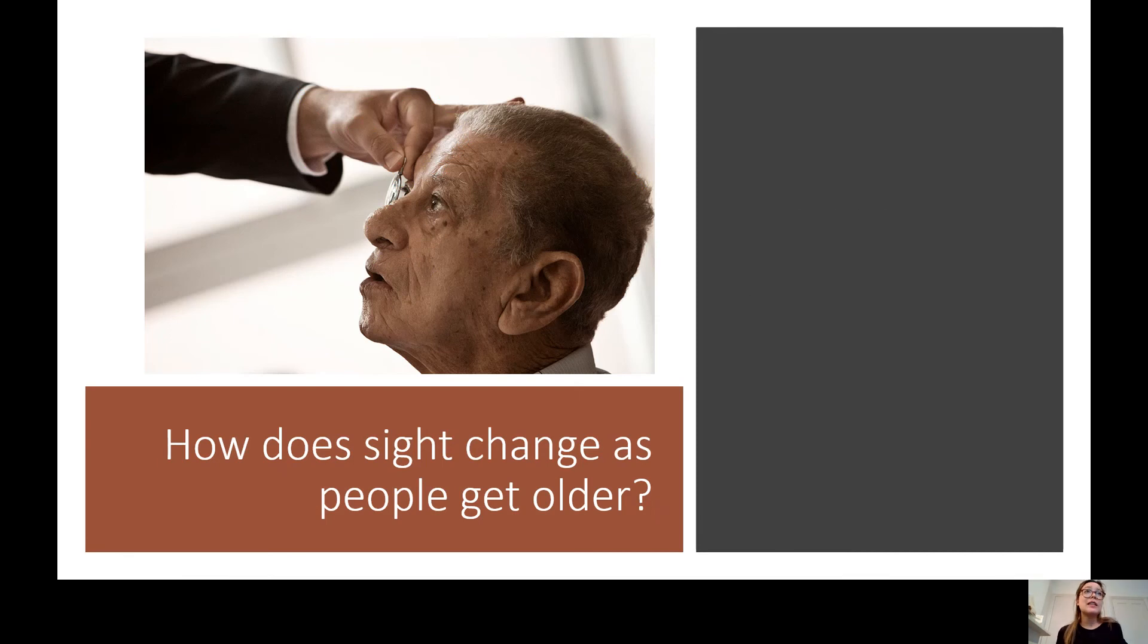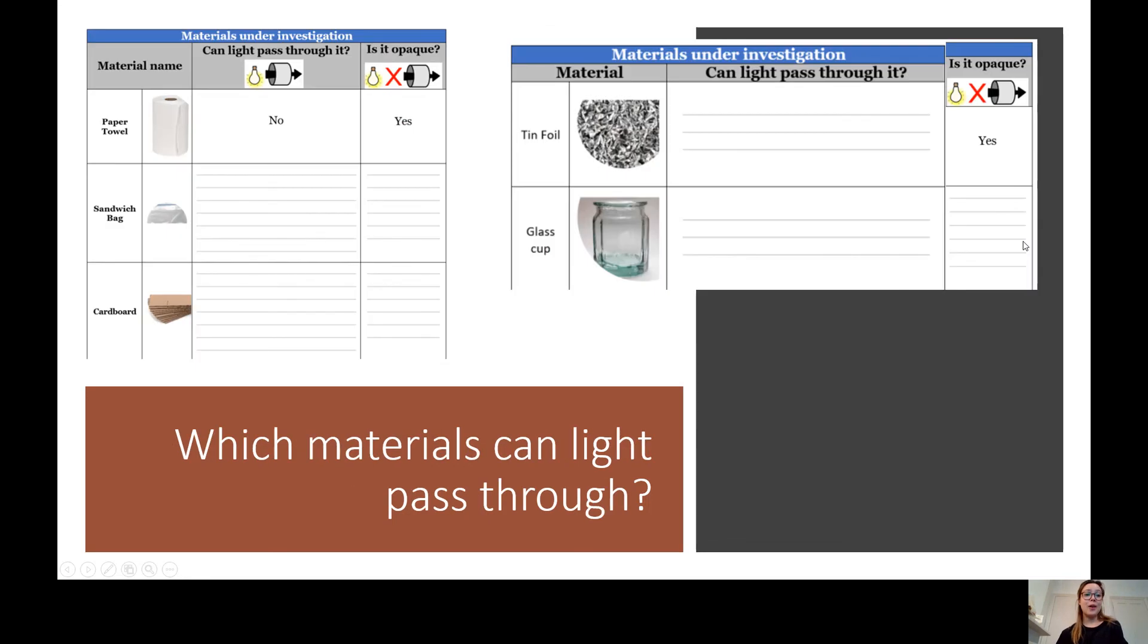Right. Now, eyesight does change when we get older. Our eyes get worse when we get older. For example, when I was young, I didn't need glasses and now I wear glasses. And in 30, 40, 50 years, my eyesight will get worse. And that is just part of getting older. And it's just a normal process. So we can see here that this old man is getting his eyesight checked.